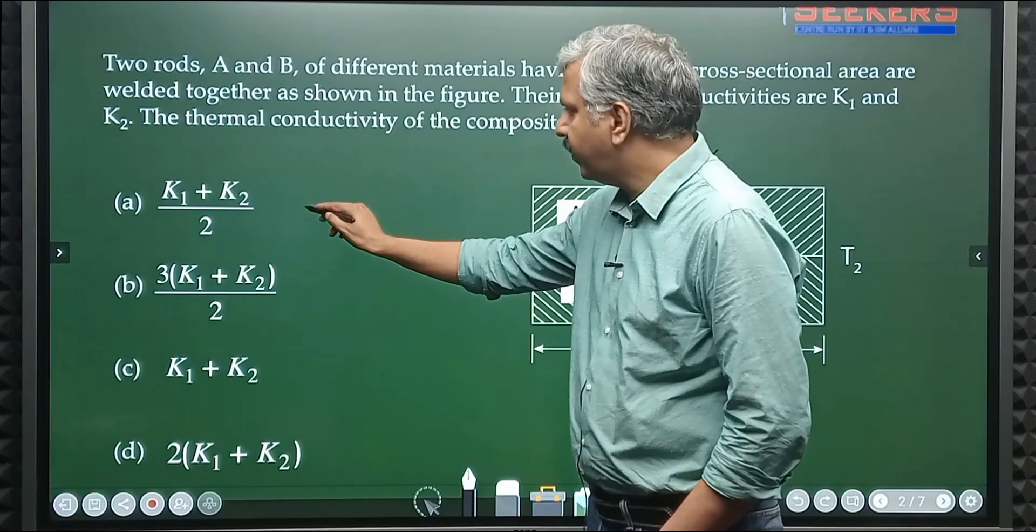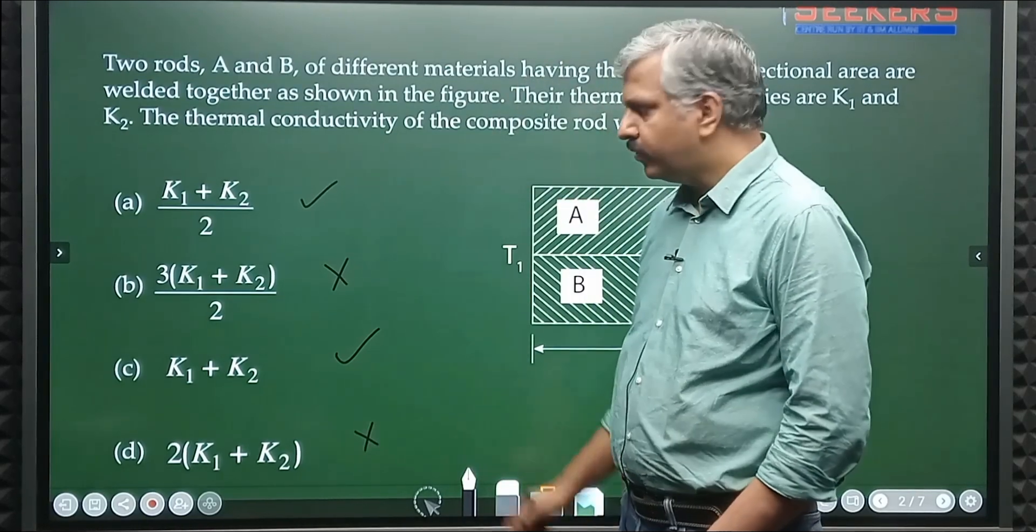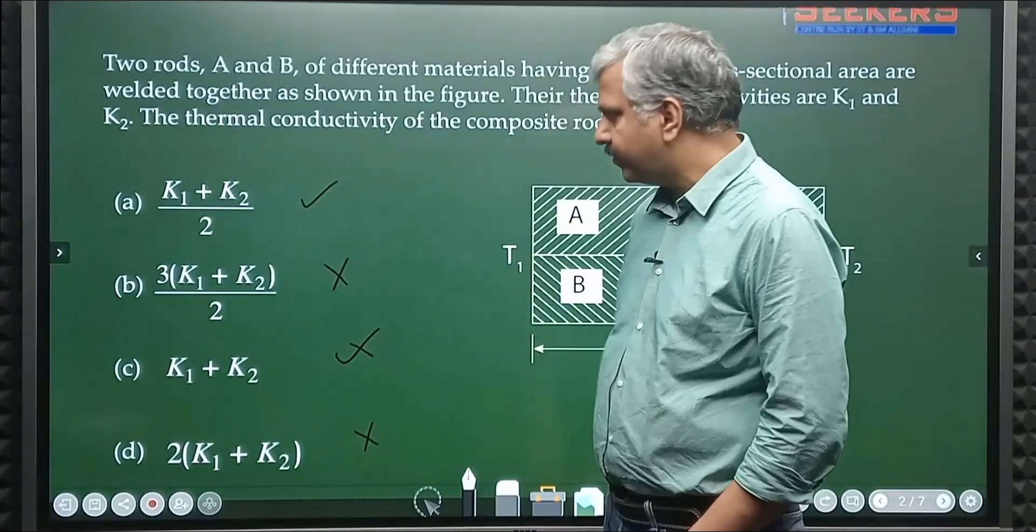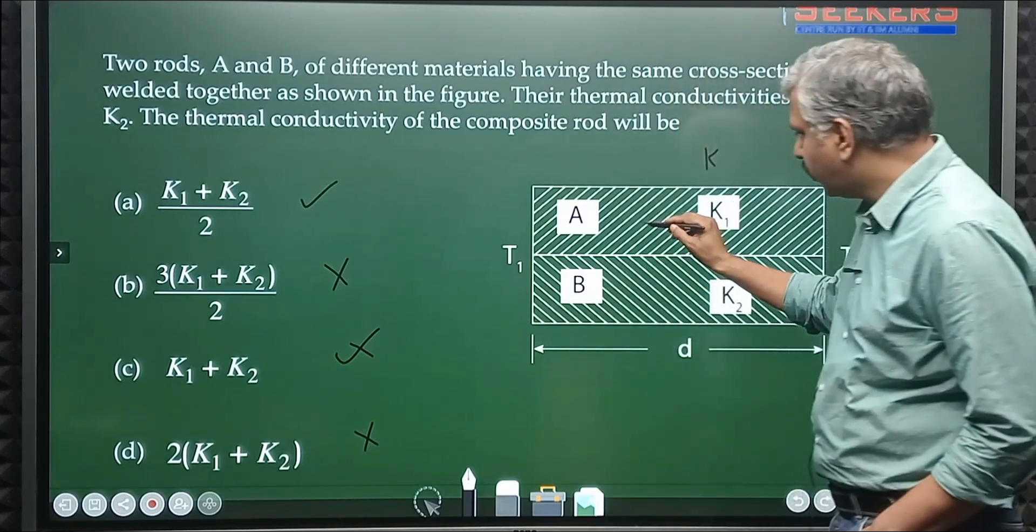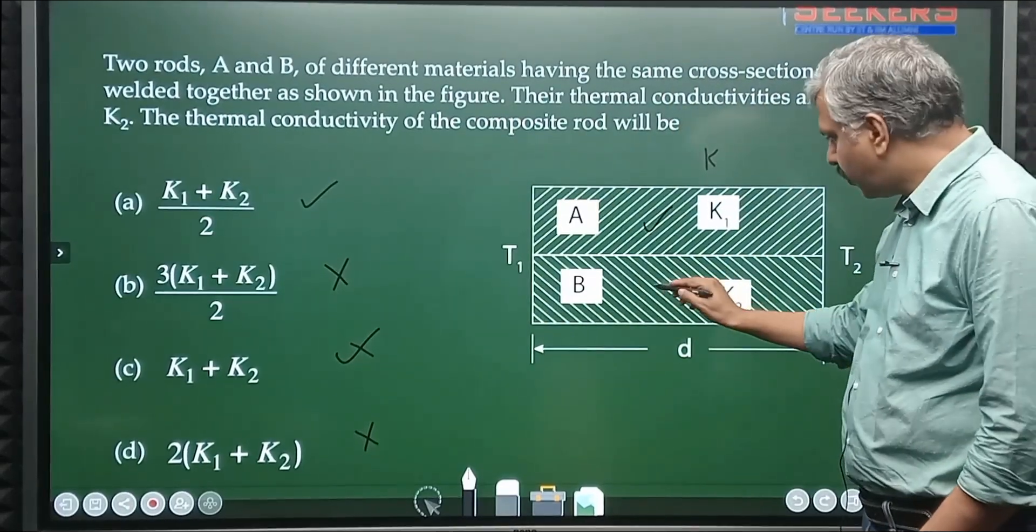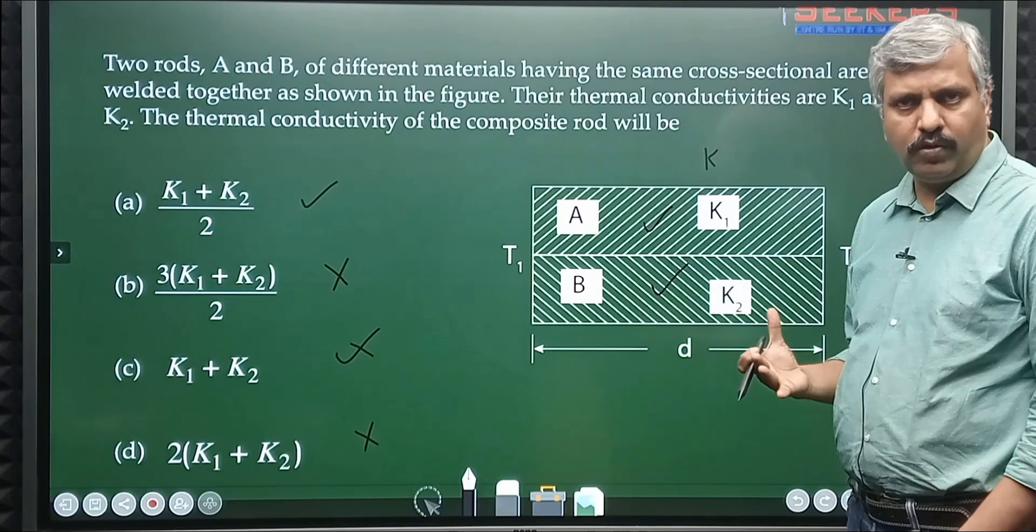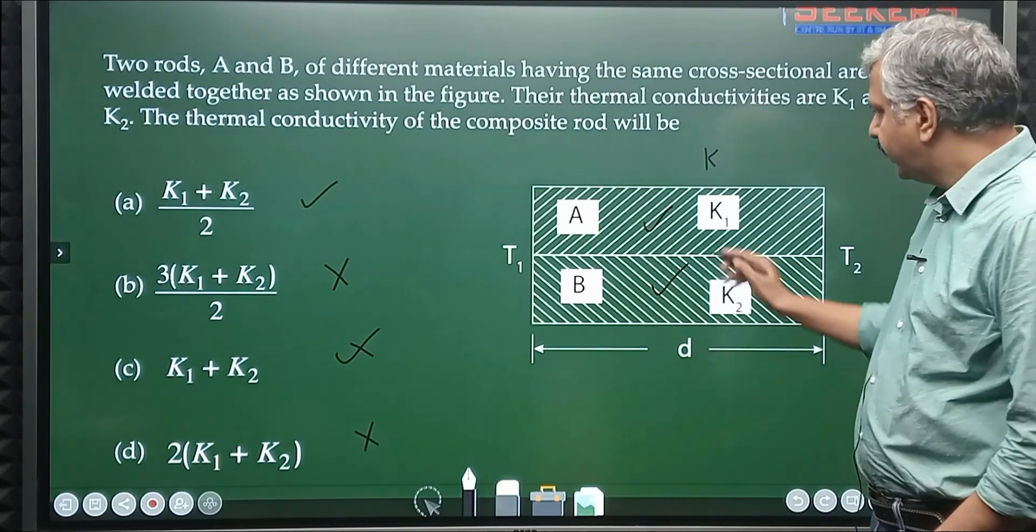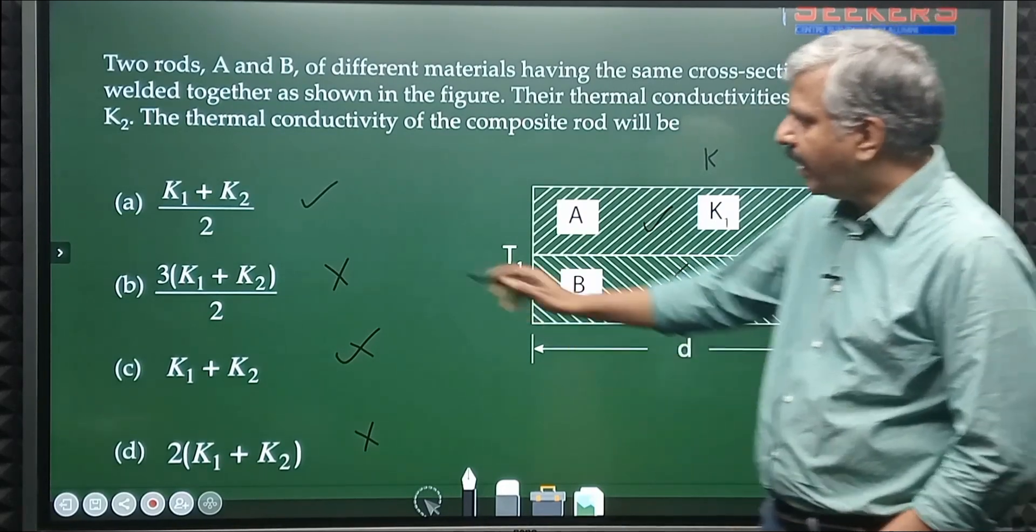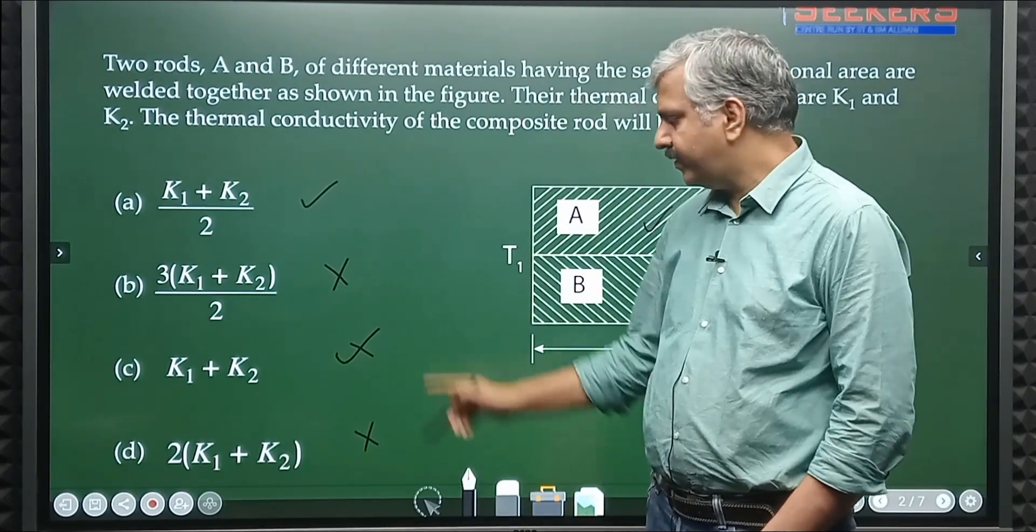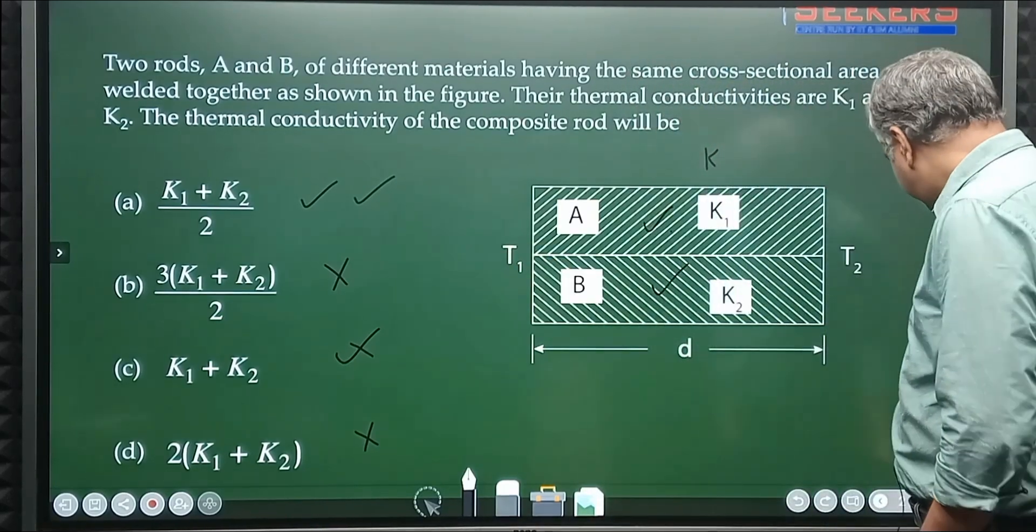From this option K will come, from this option K will not come, from this option 2K will come, from this option 4K will come. So none of these can be the answer, only option one can be the answer. You don't need to know any theory. If I simply apply logic that if K1 equals K2, overall conductivity should be K, I substitute and see three options are ruled out and the first option is the only correct option.